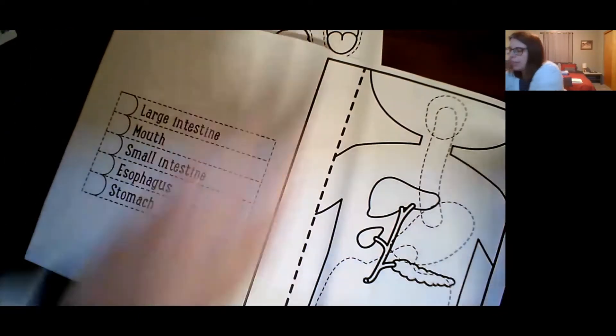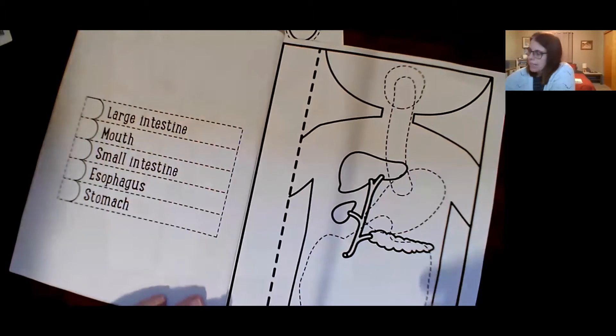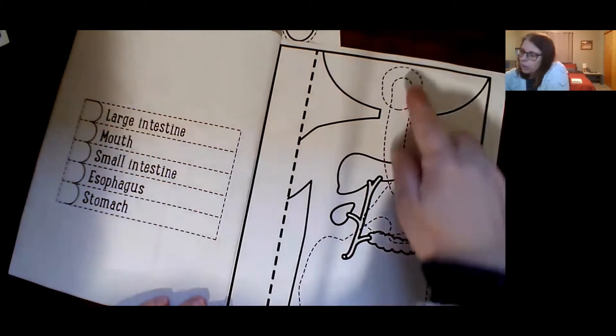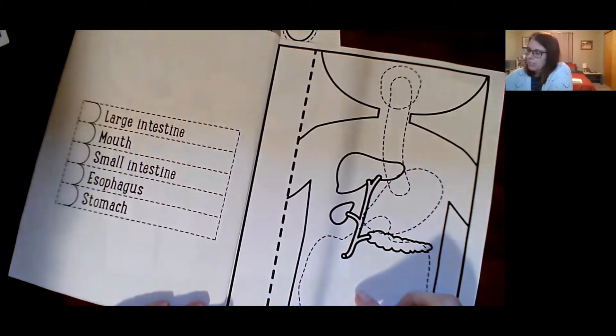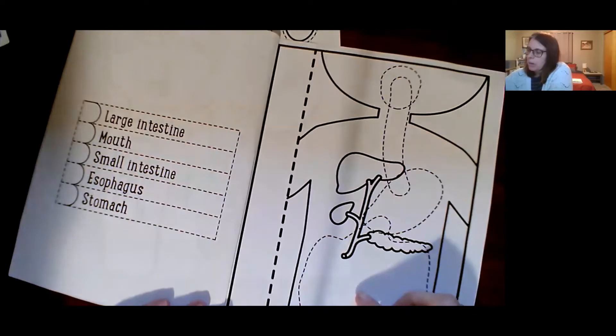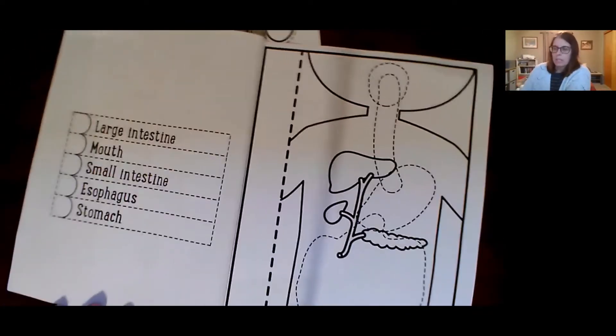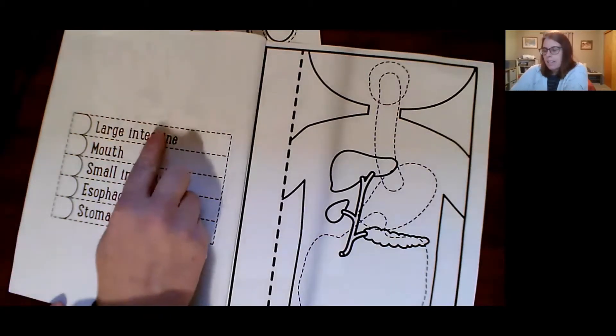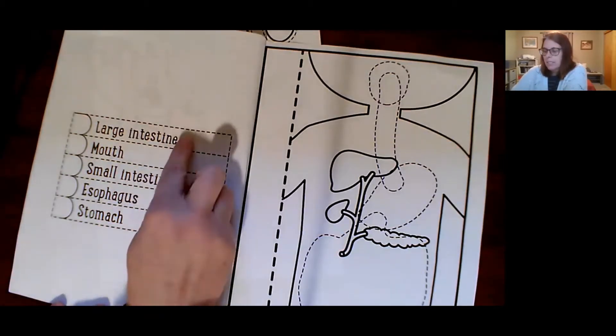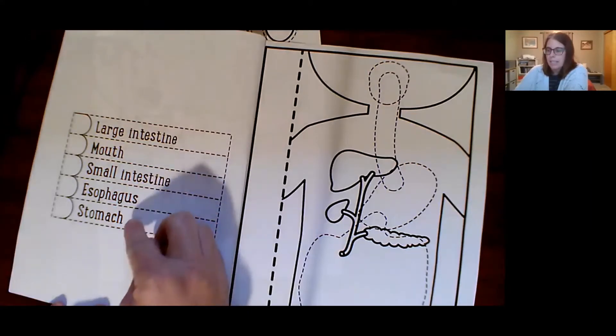So there's two different things that we'll be doing today. On this page, we'll glue in the different parts of the digestive system and we'll color them first and then we'll glue them in. And on this side, here's the different parts. It says large intestine, mouth, small intestine, esophagus, and stomach.